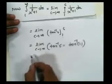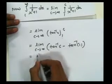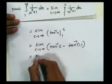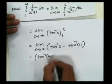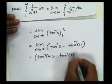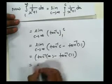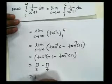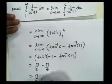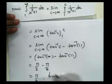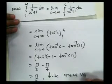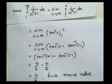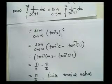Putting the limits, this is limit c tends to infinity of tan inverse of c minus tan inverse of 1. We know that tan inverse of infinity is π/2 and tan inverse of 1 is π/4, so the final answer is π/2 minus π/4 equals π/4, which is a finite unique value. Hence the given integral is convergent, and since the modulus is convergent, the given integral is also convergent.